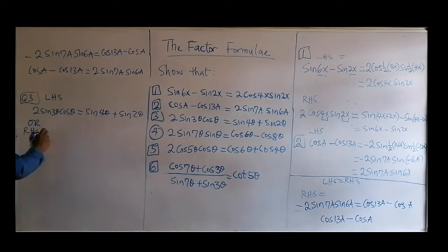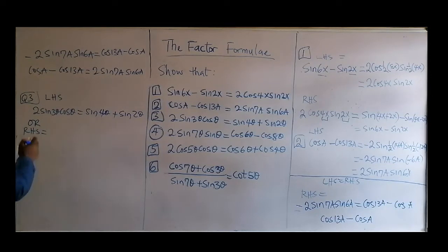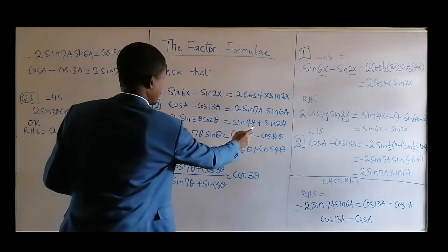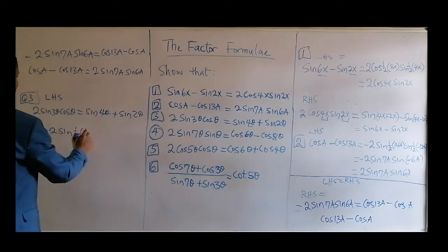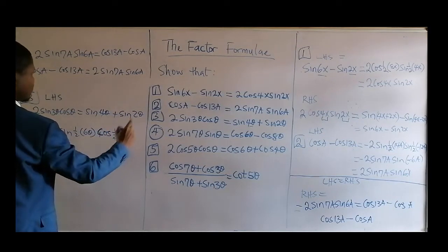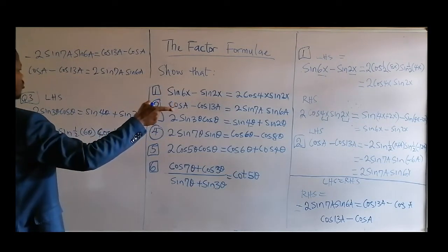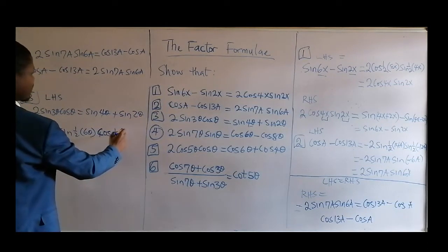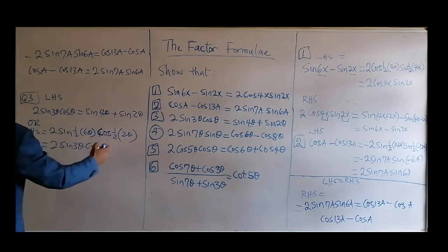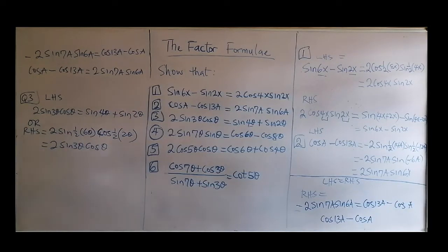If you also want to start from the right-hand side, you have additions of sines, which is equal to 2sine of half into brackets. The sum (4θ + 2θ) = 6θ, then cosine of half of (4θ minus 2θ) = 2θ. And finally that gives 2sin(3θ)cos(θ) — half of 6 is 3, half of 2 is 1 — so that matches. Both sides confirmed.